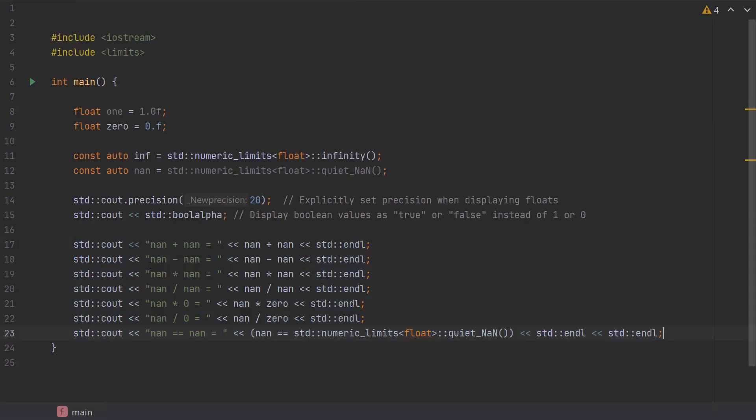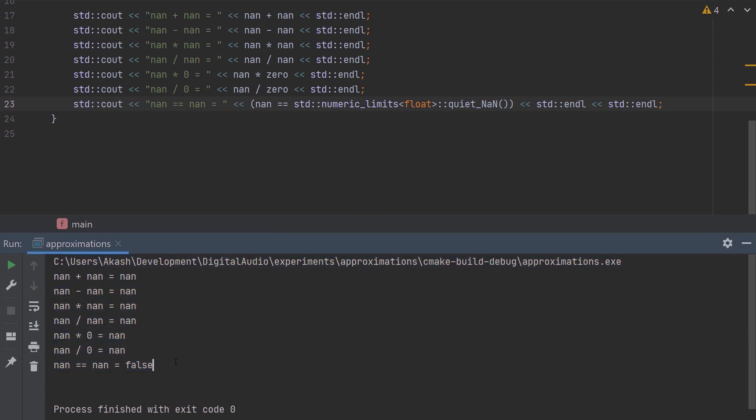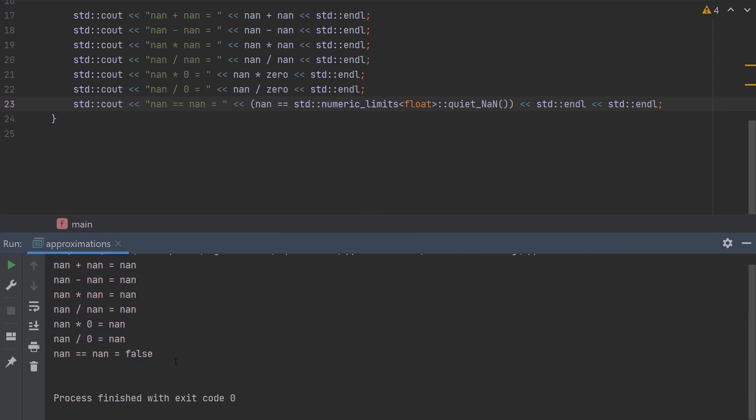So let's quickly look at some operations on NaNs. The same drill as before. I'll just print these out. So you can see operations on NaNs always result in NaNs. And the equality comparison between two NaNs would always result in false.